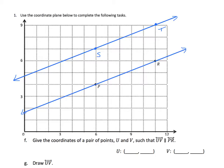Finally, we're asked to give the coordinates of a pair of points, U and V, such that line UV is parallel to line PR. Well, let's review what we did in the previous problem.